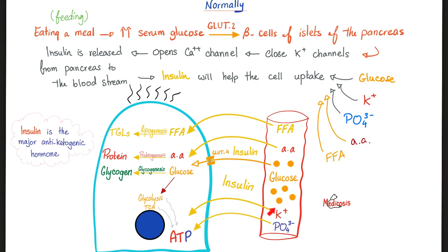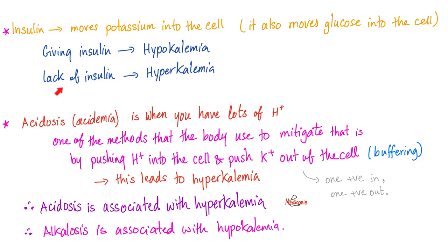Let's do the opposite: too much insulin, maybe because of an insulinoma. All of that potassium will be pushed inside the cell, leading to less potassium in the blood — hypokalemia. So giving a patient insulin can lead to hypokalemia, while lack of insulin, as in type 1 diabetes, can lead to hyperkalemia.